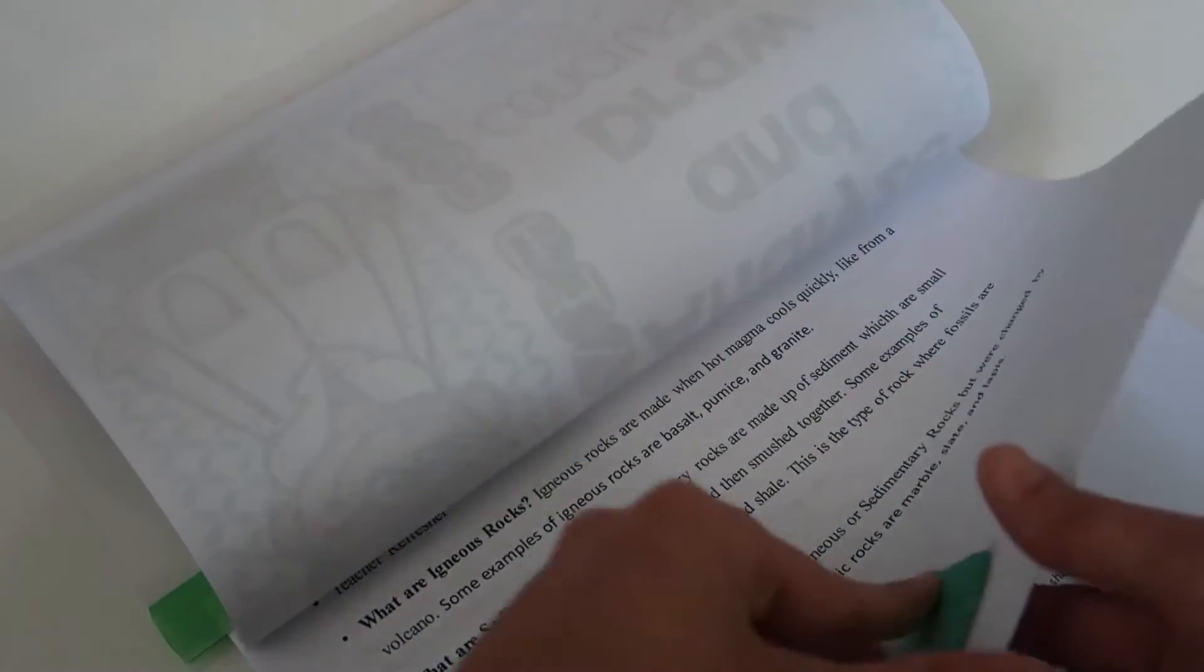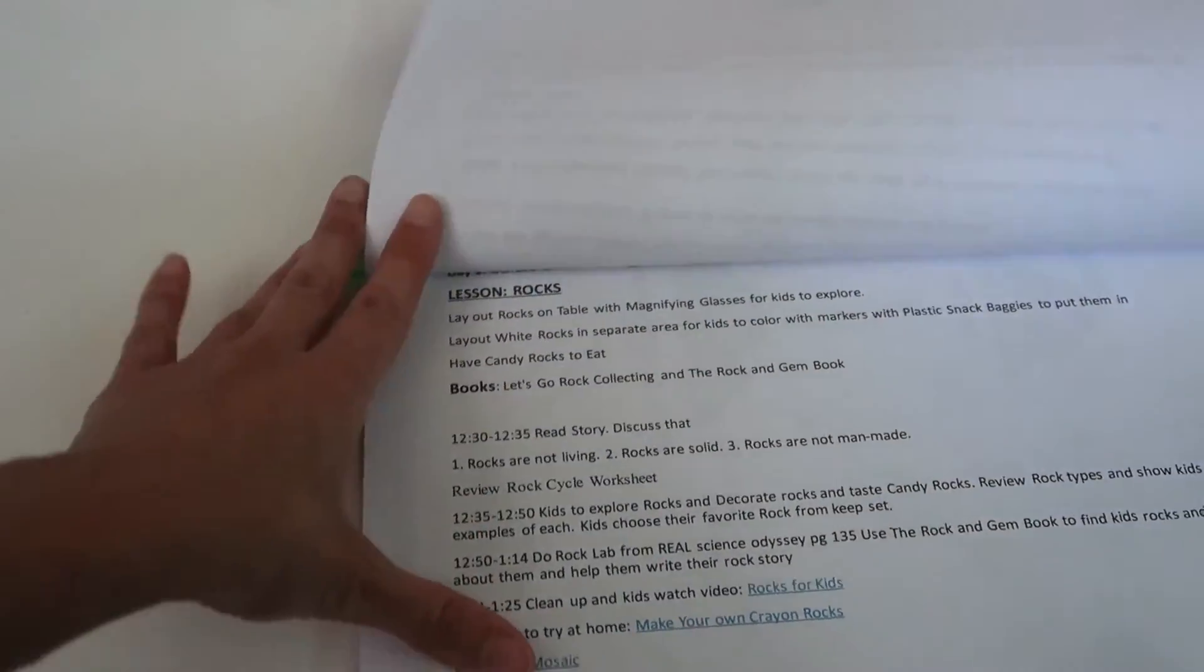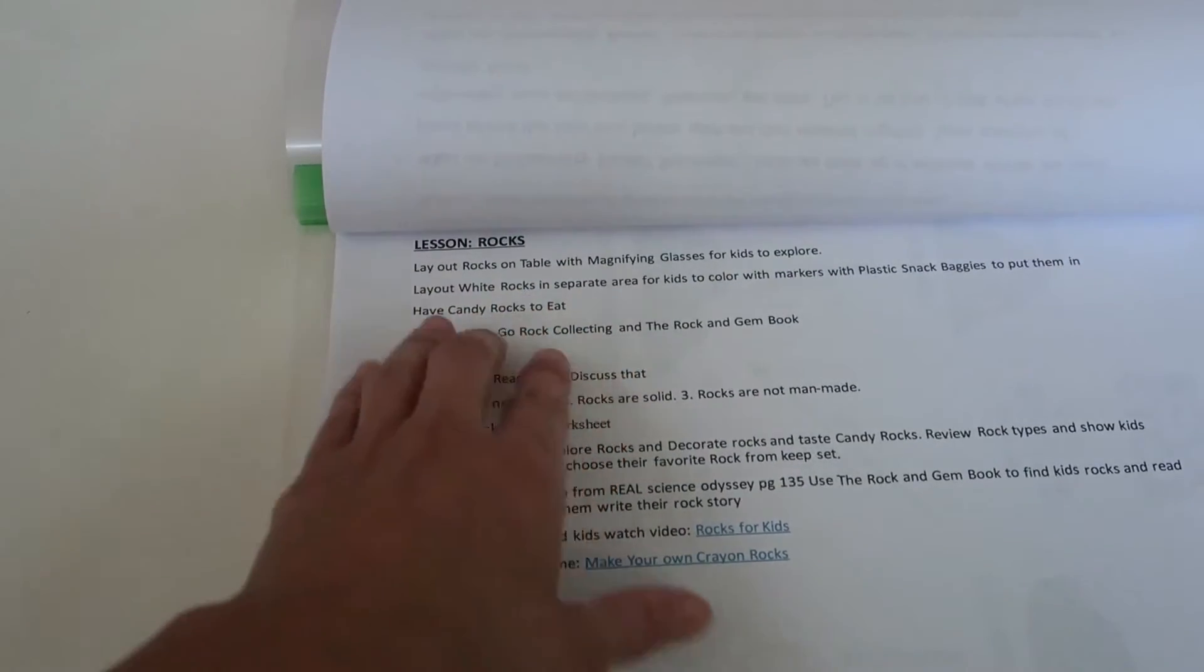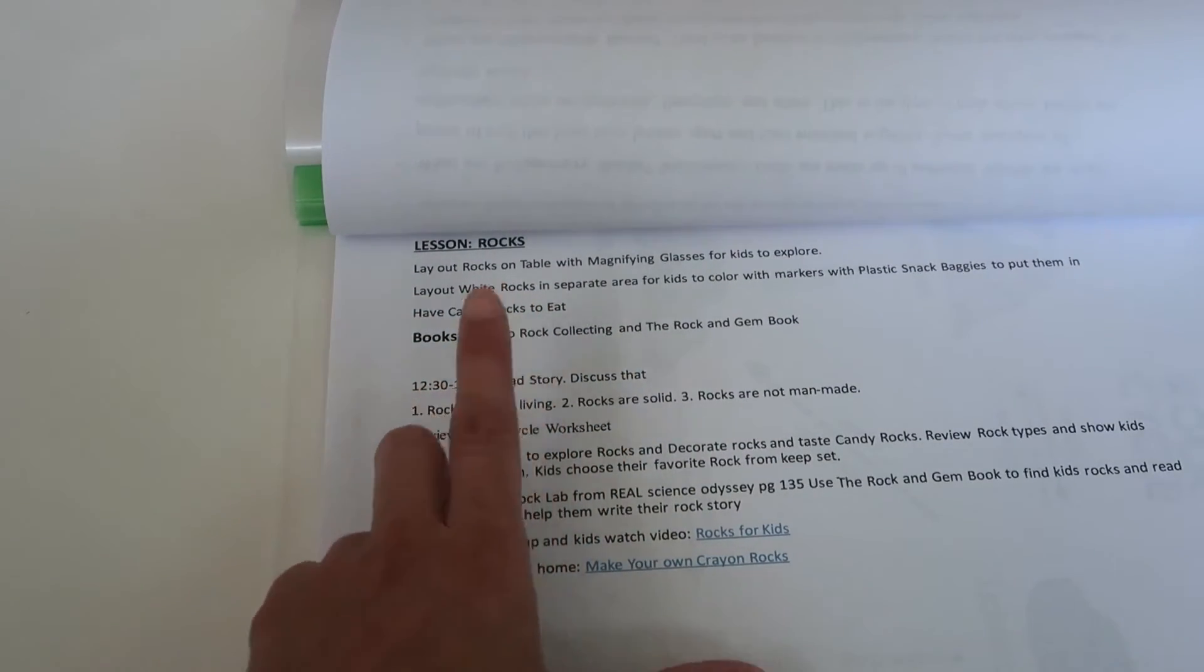And then I'll give you another example of a lesson. So if we're going to do rocks, we're going to have rocks for the kids to look at. We're always going to have a hands-on activity. We're always going to have books.